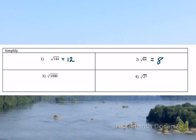The cube root of 1000 is asking you what number, as a factor 3 times, would give you 1000, and that value is 10. What is the cube root of 27? Hopefully you got an answer of 3. If you didn't get that answer, please make sure you're asking questions in class.